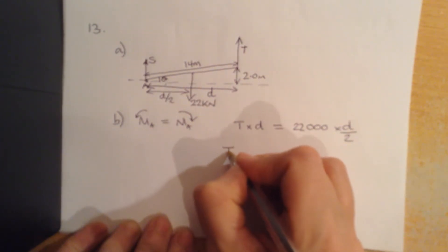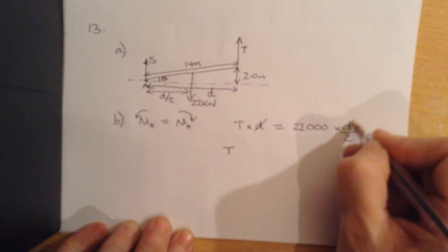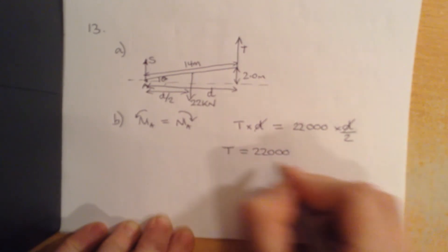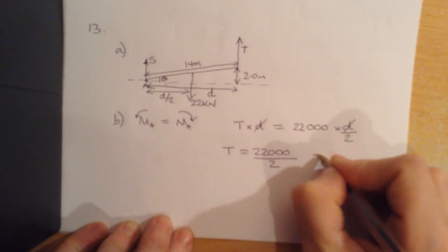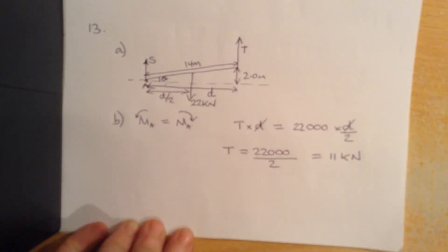So our tension, well you can see I've got d on both sides of the equation here, so I can actually cancel those. So it's equal to 22 kilonewtons divided by 2. 11 kilonewtons. Done.